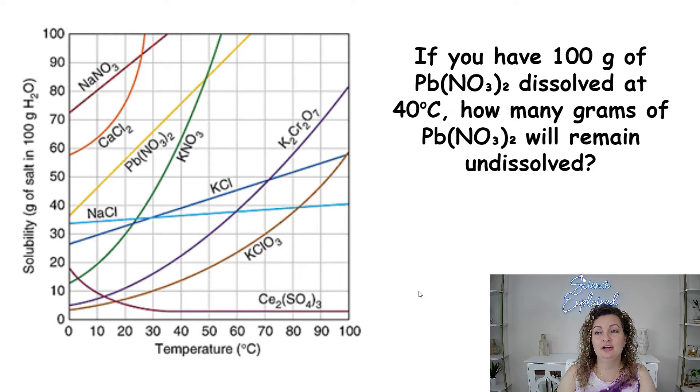If you have 100 grams of Pb(NO3)2 dissolved at 40 degrees Celsius, how many grams of Pb(NO3)2 will remain undissolved? So now this is a different question. Pause and try to figure it out.